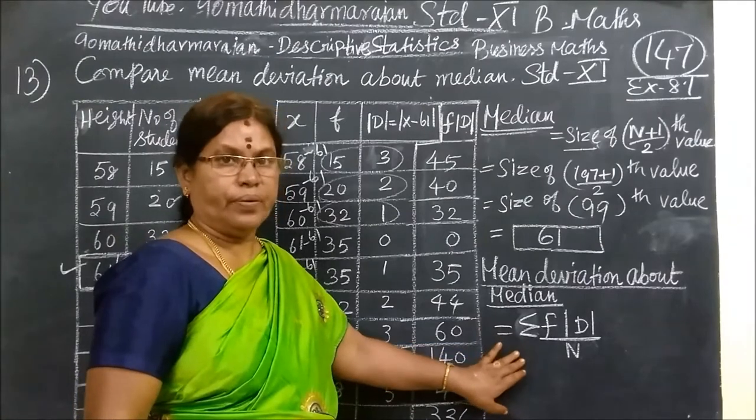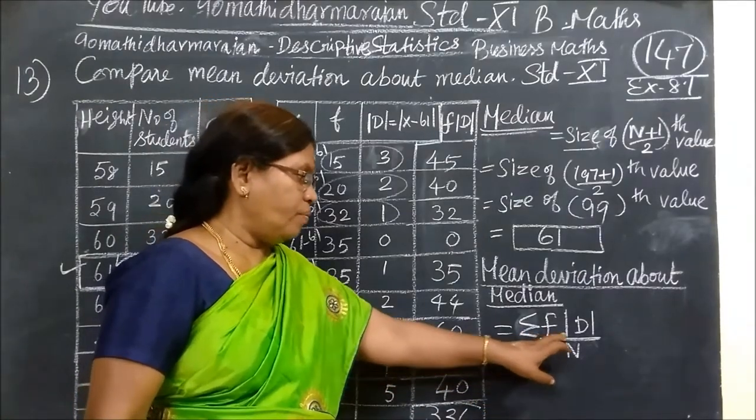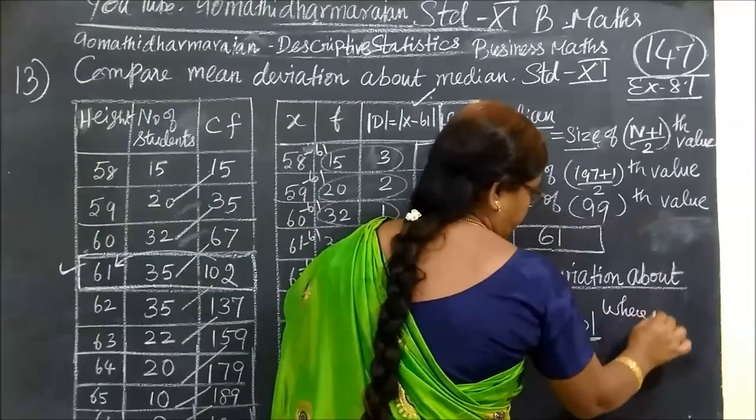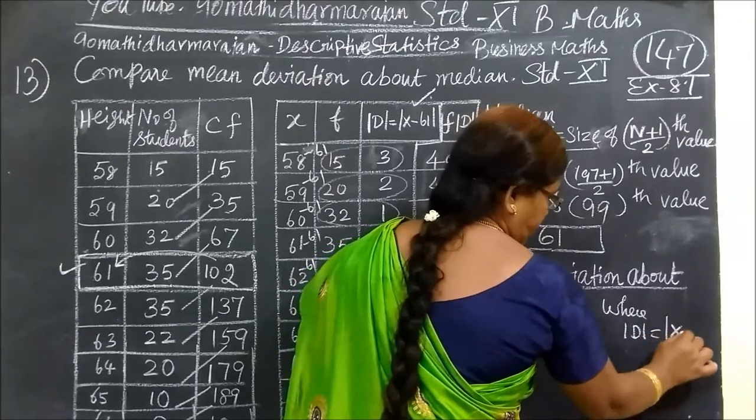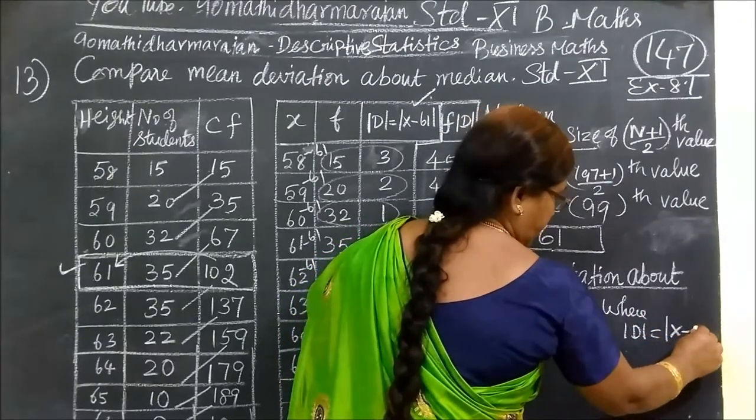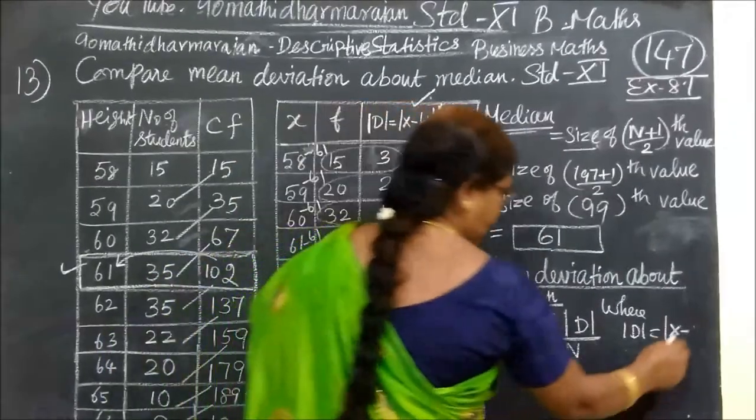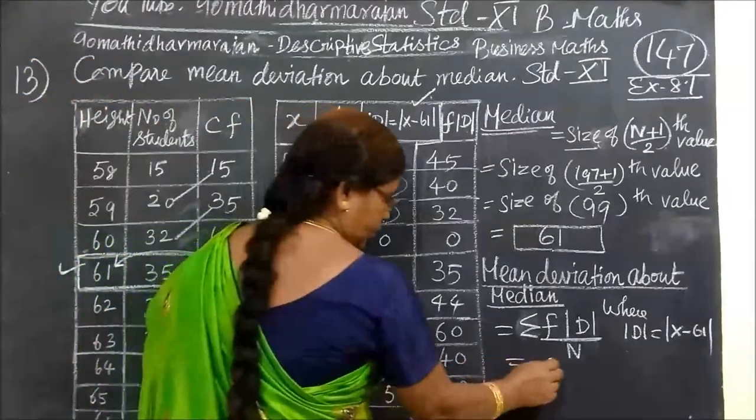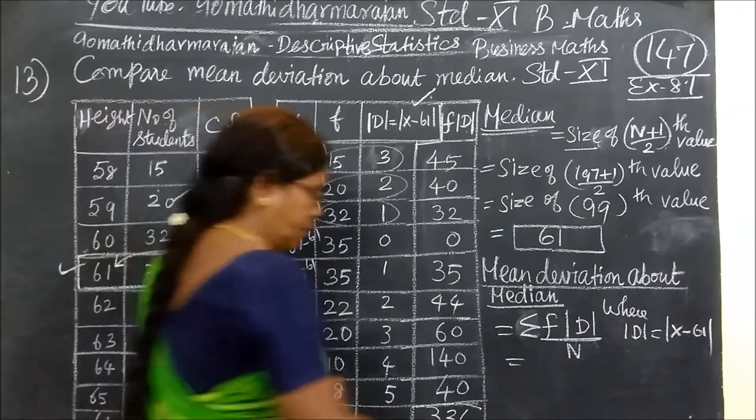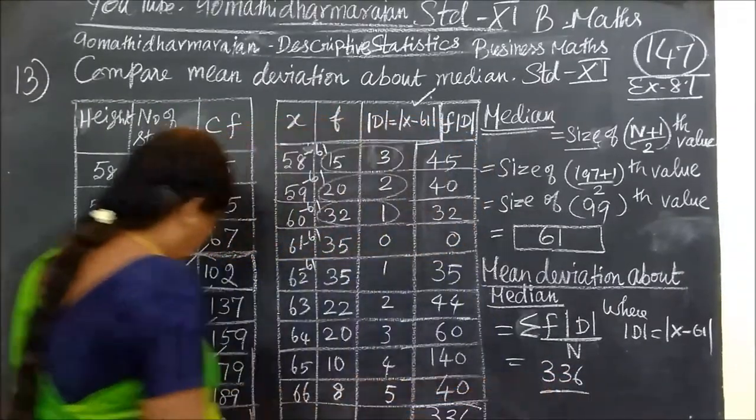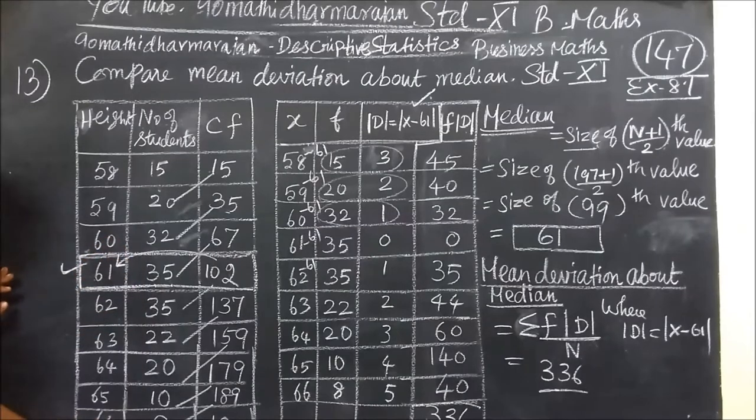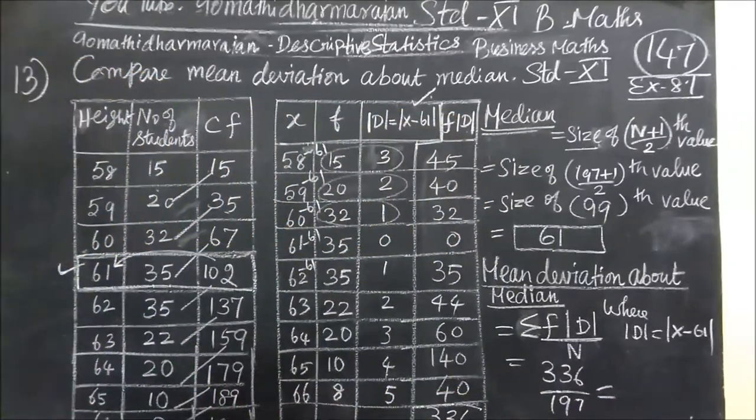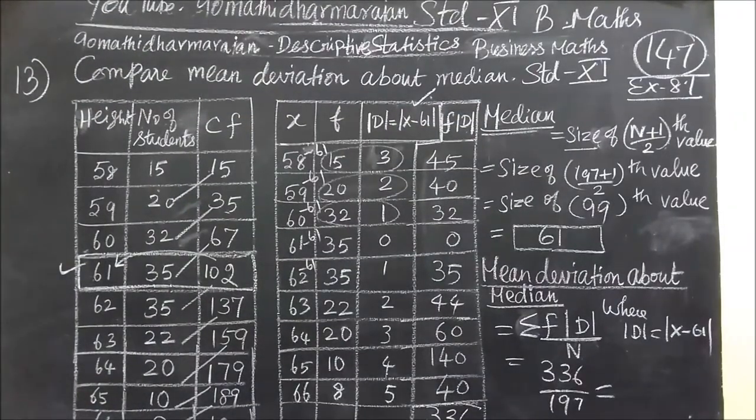This is mean deviation about median formula. Sigma F of modulus of D. Modulus of D is nothing but, you know, this is the class where modulus of D equal to S minus median. This is 61. So 336. Why? This is sigma N, 197. So this is your answer is 1.71.